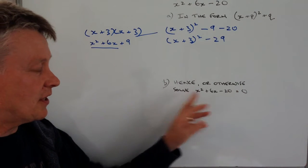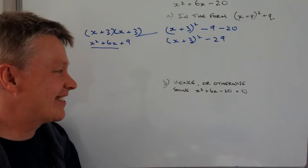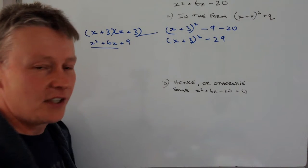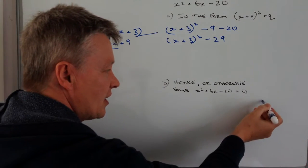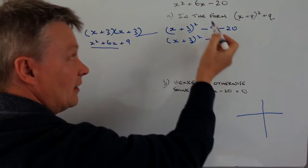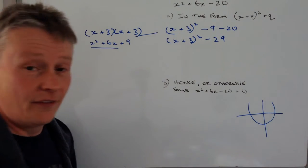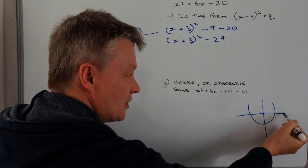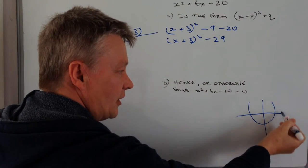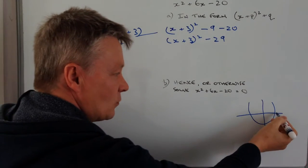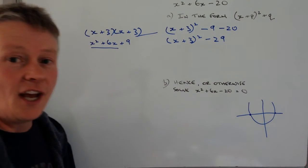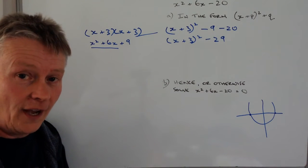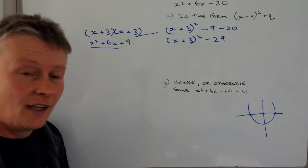So the last bit of this is hence or otherwise solve the same equation. But what you'll notice this time is that it equals 0. So in other words, what we're saying is if this equation has a shape a bit like that, because it's a quadratic equation, at that point where y equals 0—so in other words it's gone along but not actually gone up into the y-axis—what's the value of these two points? And we can use this whole idea of completing the square to solve that. It's just really using a little bit of algebra.